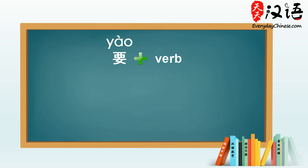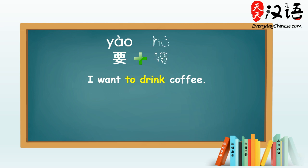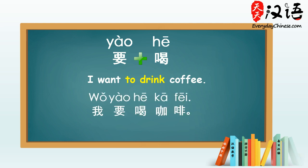For example, to say I want to drink coffee, we use the verb 要 plus the verb to drink 喝. So, I want to drink coffee: 我要喝咖啡.